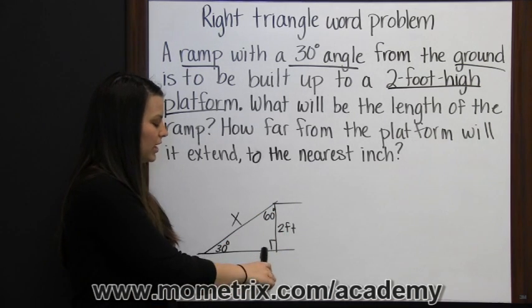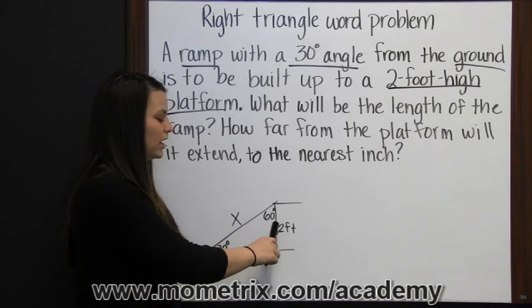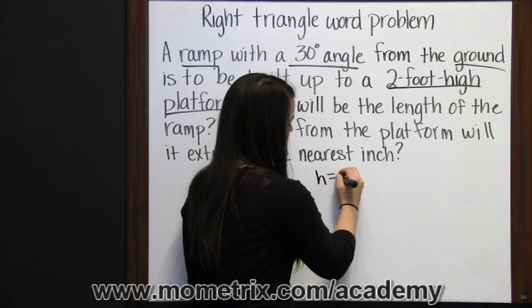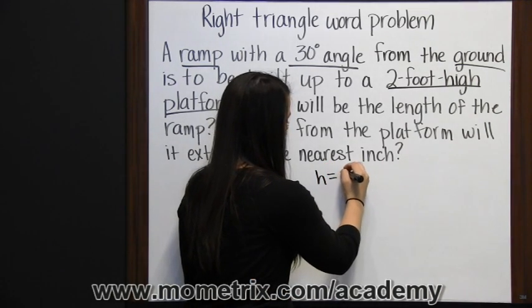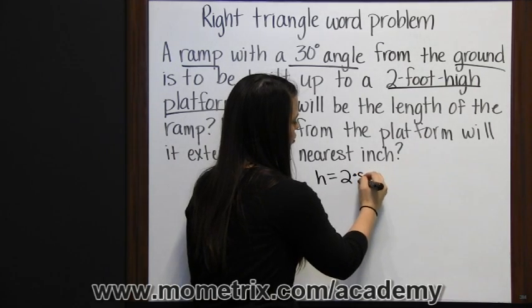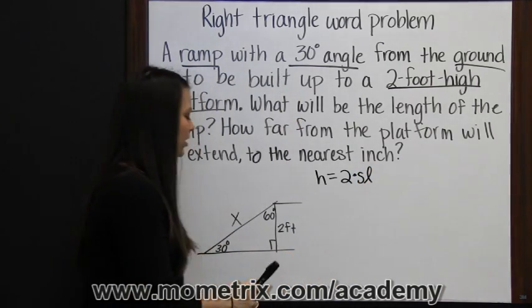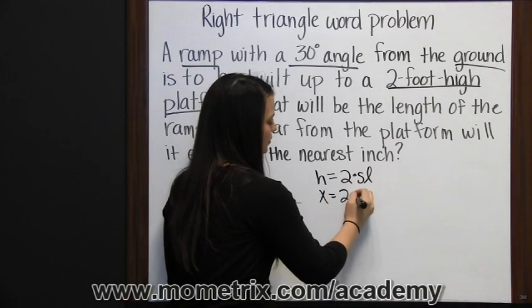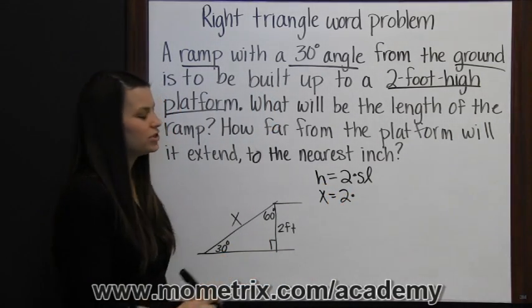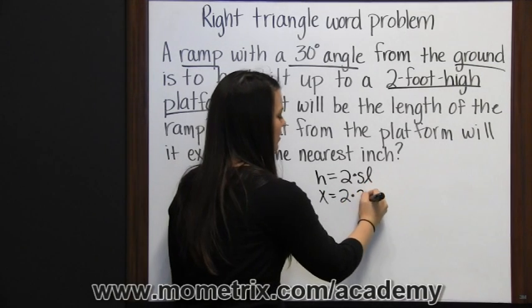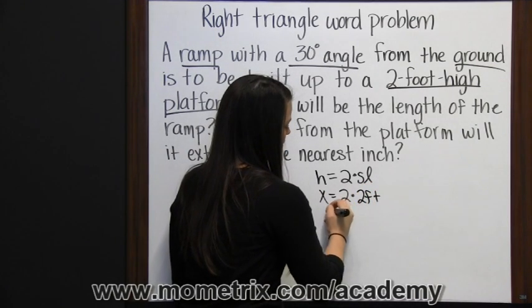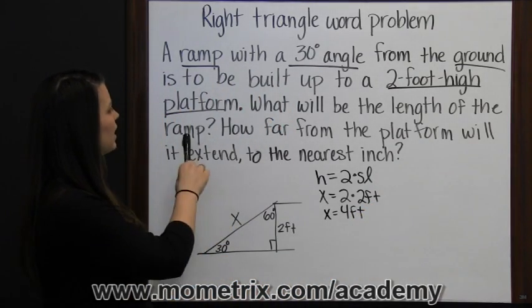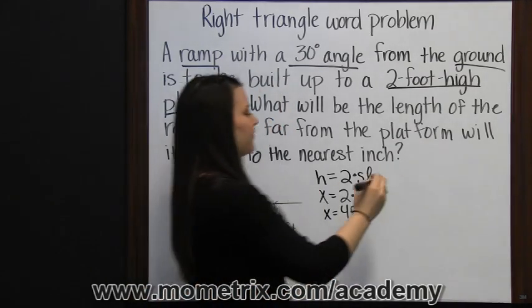The side we know is across from the 30 degree angle, so it's our shorter leg. And the hypotenuse of a 30, 60, 90 triangle is twice as long as the shorter leg. Our hypotenuse, again, we're using x for, equals two times the shorter leg, which is that two foot side, so two times two feet, which means x is four feet. Therefore, the length of the ramp is four feet.